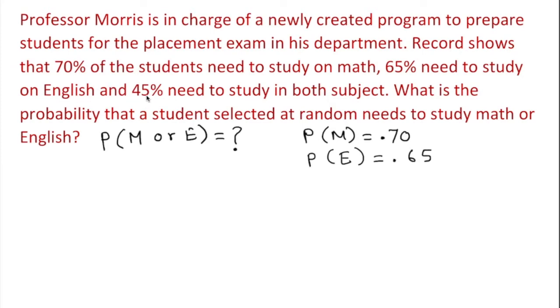Now they give us one more piece of information: 45% need both. So what do we know about that? We know probability of math and English is 45%, or 0.45.